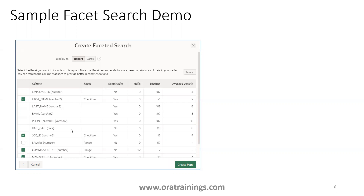We can change it later, but generally what happens is based on the data type, it simply selects checkbox or range based on the value. It also provides a selection option — you can select it, unselect it, or change it later. For display type, we have two types: one is a report, which displays the data in table fashion, and the other is a card, which displays a card-style layout. Once you select 'Create Page', the page structure is set up.